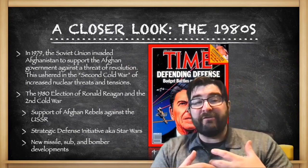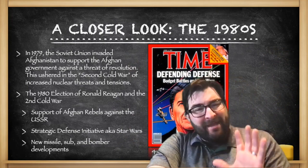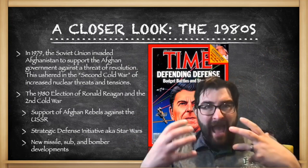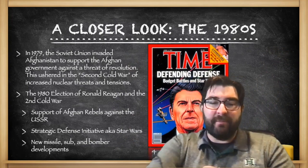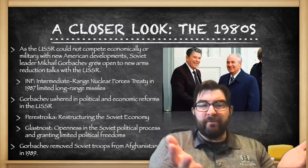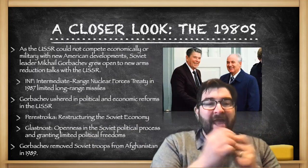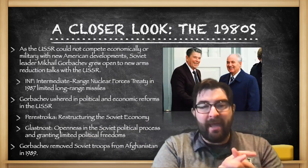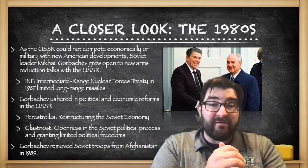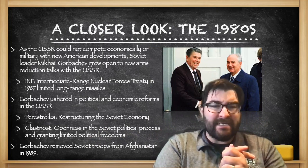The United States also looked into new missile developments, submarine developments, and new bombers, essentially pouring money into the military to have a new and advanced military that the Soviet Union would not be able to compete with. As the Soviet Union realized they couldn't compete economically or militarily with the United States, a new Soviet leader named Mikhail Gorbachev grew open to having new arms reduction talks with Ronald Reagan, starting in the mid-1980s.